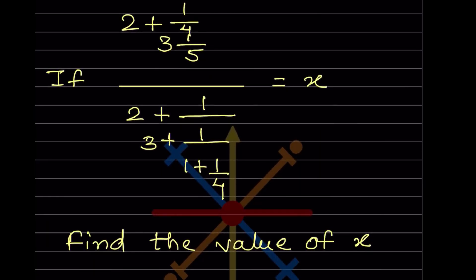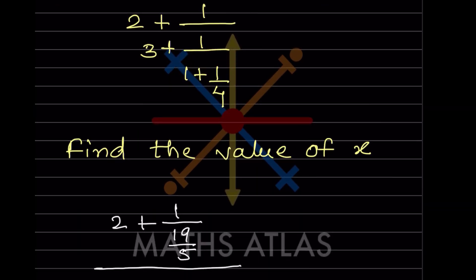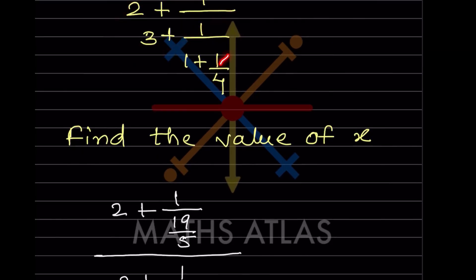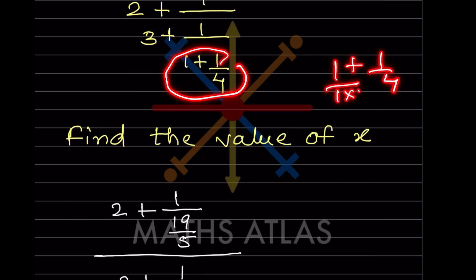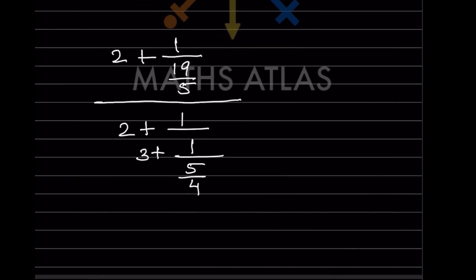Now let us go to the denominator and solve its inner part. We have 1 + 1/4. The LCM is 4, so that gives us 4 + 1 = 5, meaning 1 + 1/4 equals 5/4.